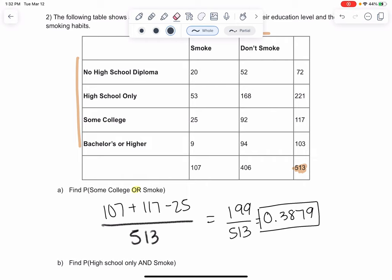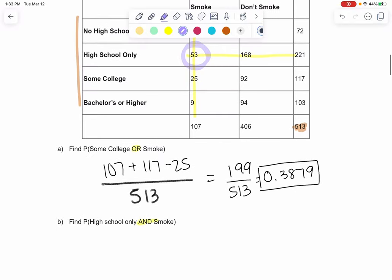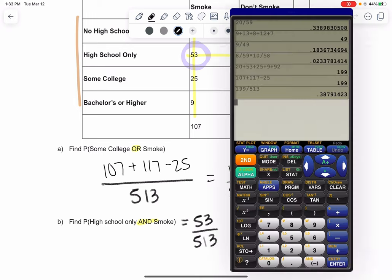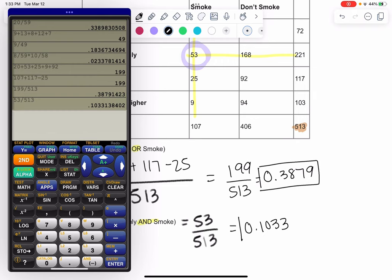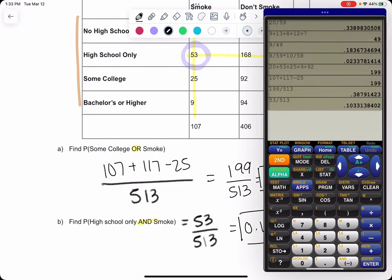The next example, we have an AND. AND is the overlap. So AND is only what they have in common. We have high school only and smoking - AND is the only piece they have in common, which would be 53. It means it has to be in both categories. So we'll do 53 out of 513 and we get 0.1033 for the AND. AND means overlap or both.